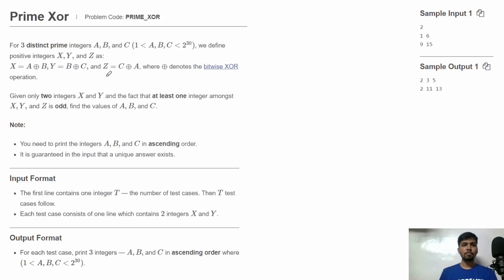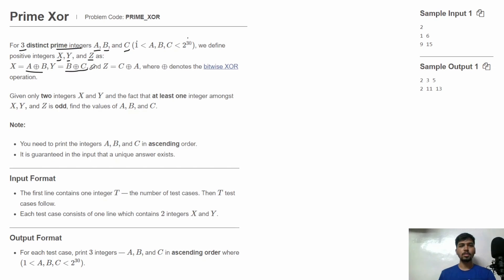So here in this problem, we are given three distinct prime integers a, b and c. The values of a, b and c will lie between 1 and 2 raised to power 30. We define positive integers x, y and z as: x equals a XOR b, y equals b XOR c, and z equals c XOR a. This symbol denotes the XOR operation.